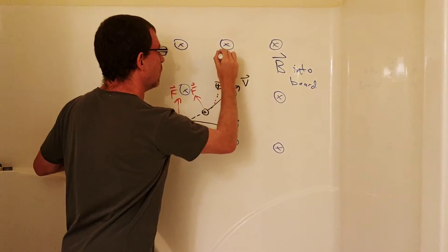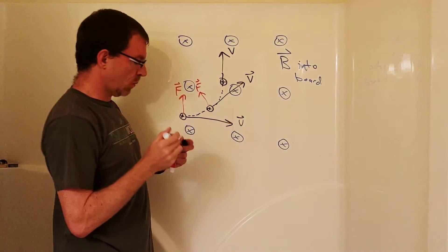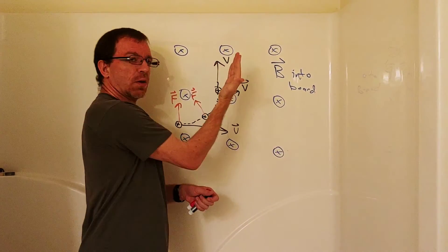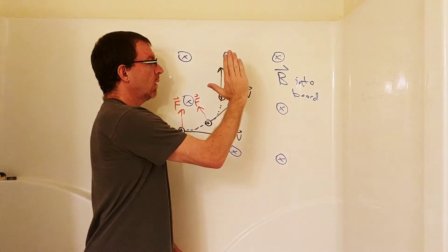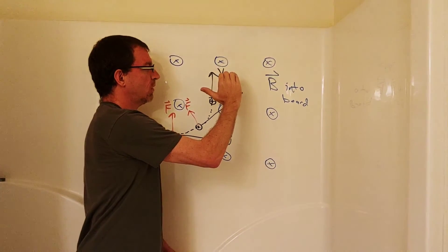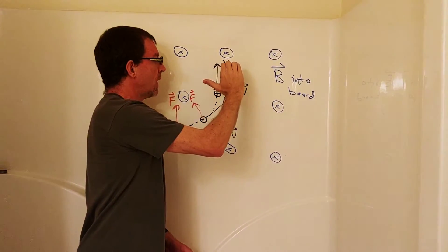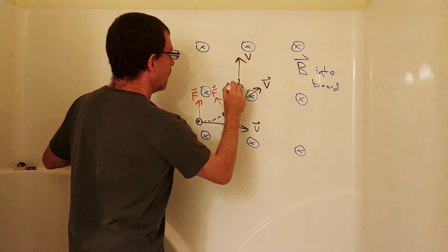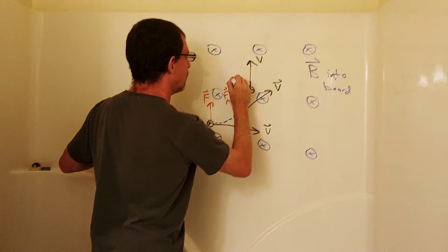Let's take a look and see what happens at this particular moment that I've got drawn. Fingers have to point in the direction of V and they have to be able to curl in the direction of the magnetic field B. It looks like my force is to the left.